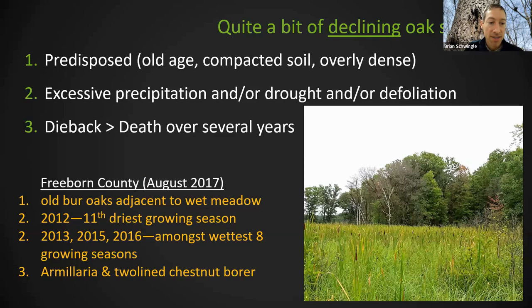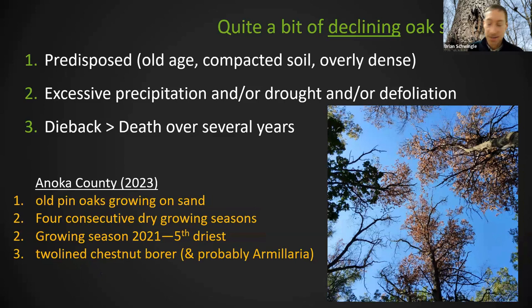Here's another shot near Albert Lea, taken in August 2017 — nearly identical situation, just several years earlier. Old bur oaks growing next to wet meadows, with cattails visible. 2012 was the 11th driest growing season on record, and then 2013, 2015, and 2016 were among the wettest. There was armillaria and two-lined chestnut borer present.